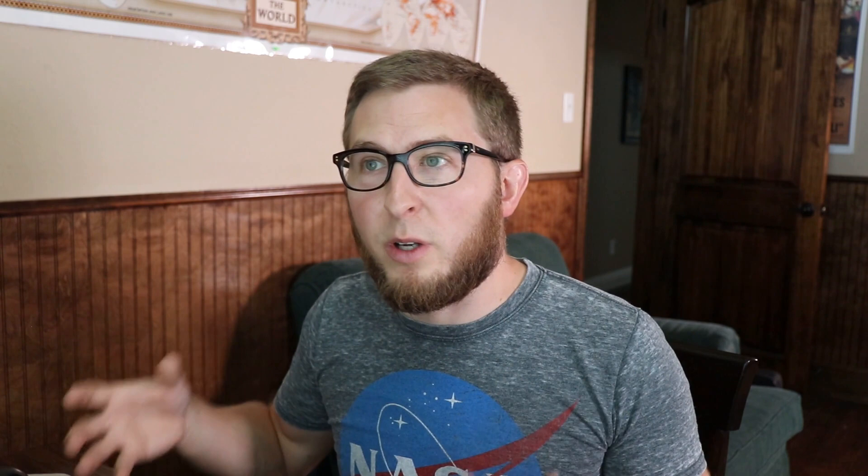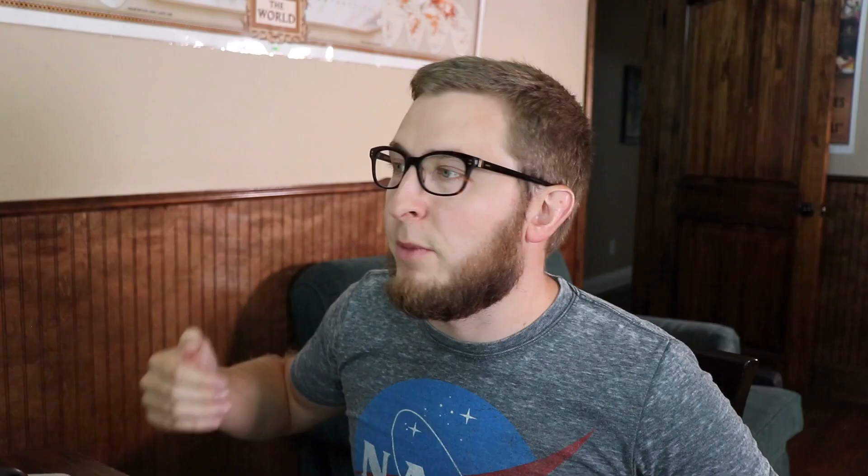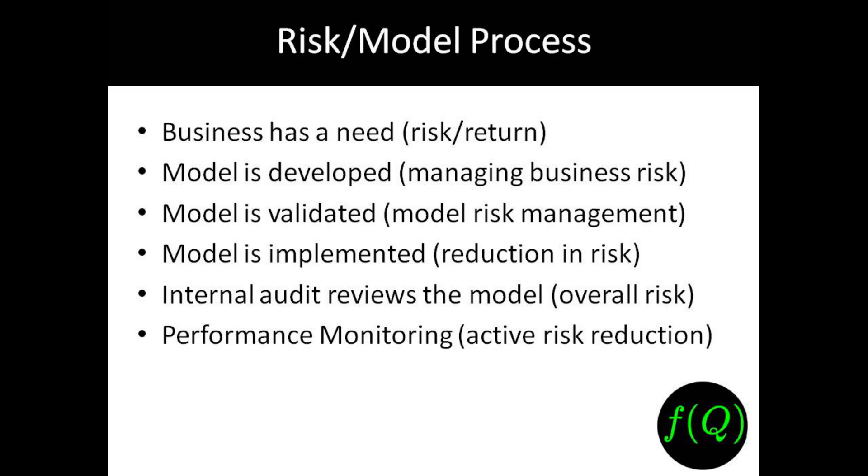After the model is developed, it goes to a validation team. The validation team reviews the model and manages the risk associated with the model itself. Validation's job is to mitigate the risk associated with the model. Next, the model is implemented — implementation teams reduce risk by actually putting the model into use, the model that has been developed and validated.